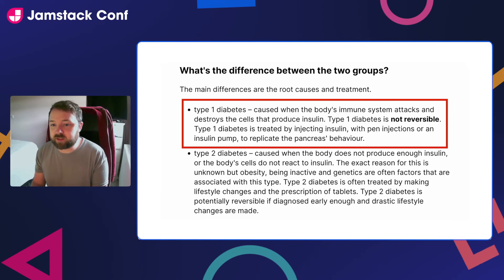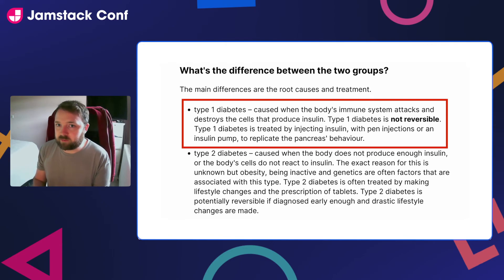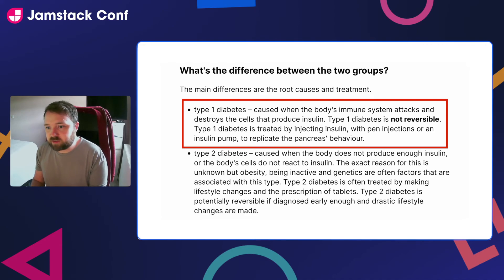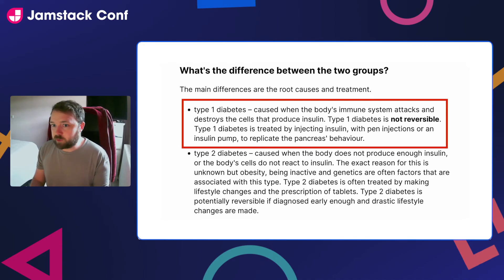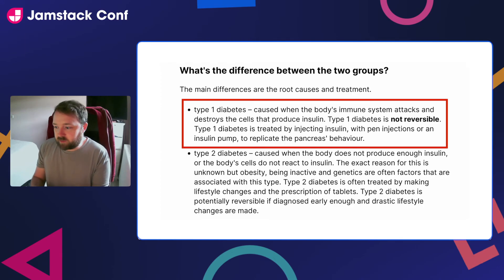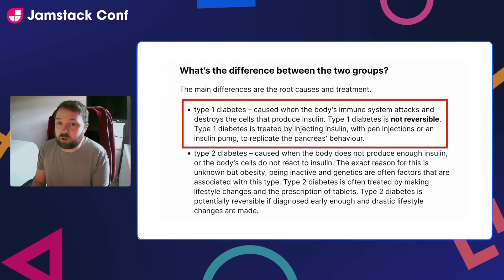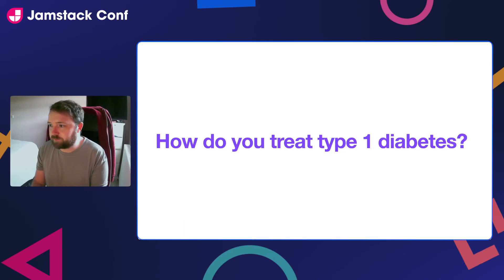Type 2 diabetics are able to create some insulin but not enough in comparison to a healthier individual. If we don't have insulin and our blood sugar levels become too high, we can get really ill. This means we can get something called ketoacidosis — or ketones — which is effectively a poison in your blood and it's not a very nice thing.